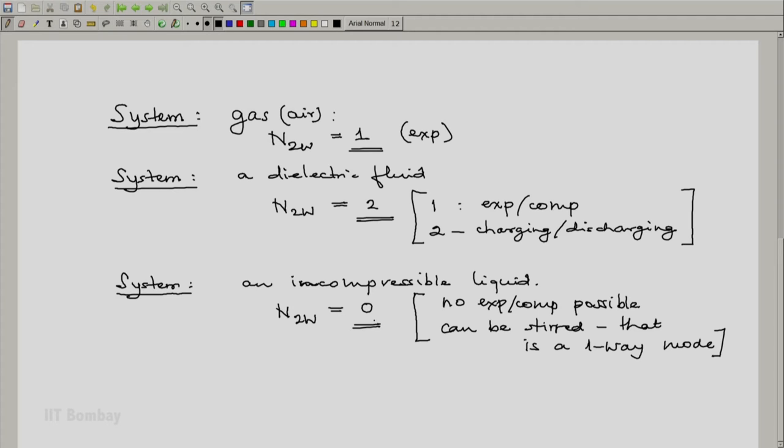Using this number, we are now going to classify the systems, and this classification will be useful later. For example, if the number of two-way work modes is 1, we will call that system a simple system.